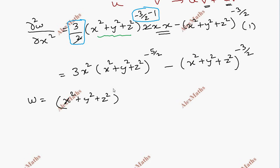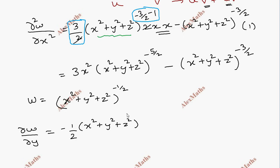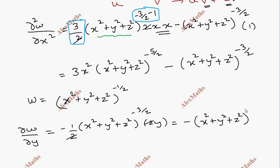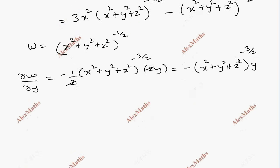Now for the y term: the power is minus 1 by 2, minus 1 by 2 minus 1. Applying the chain rule — this gives 2y, so this cuts. Total: (x² + y² + z²) to the power minus 3 by 2, into y.